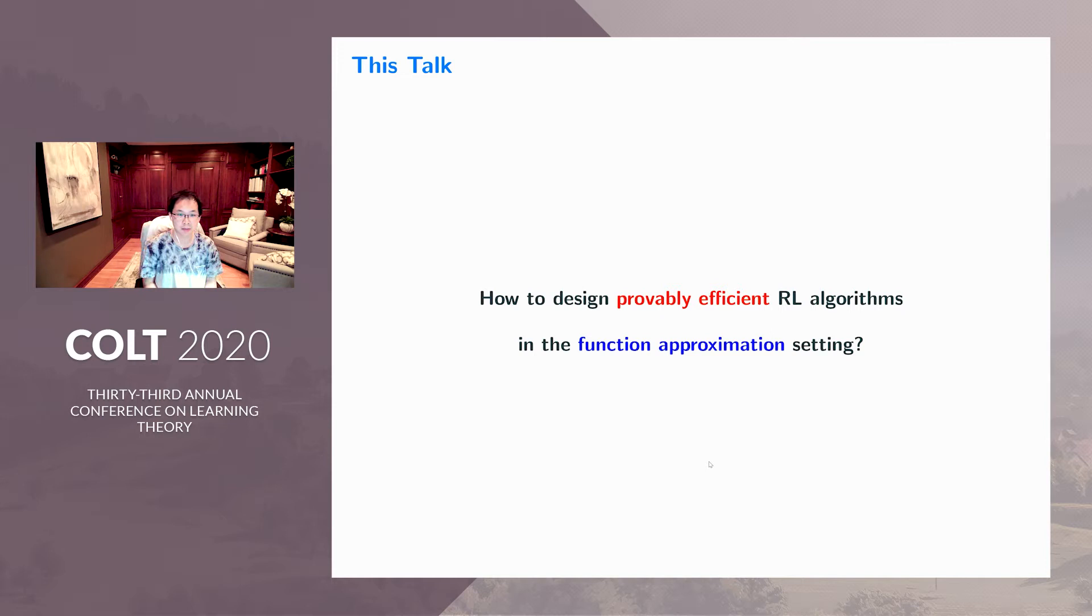In this talk, we will discuss how to design better reinforcement learning algorithms. Specifically, we want to design provably efficient algorithms in the function approximation setting. So there are two keywords: one is provably efficient, the other is function approximation.